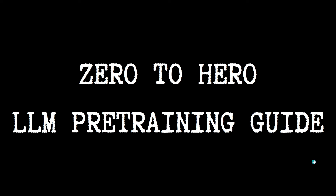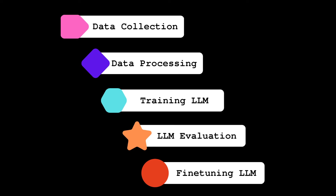You can pre-train your own LLM today with the help of this guide, whether you are an enterprise or an individual. In pre-training an LLM, the most important part is creating a training pipeline — framing a pipeline that is very scalable and also efficient enough for your model to perform well, so that your LLM becomes very robust. Any pre-training of an LLM will contain five stages: data collection, data processing, training LLM, LLM evaluation, and fine-tuning LLM.